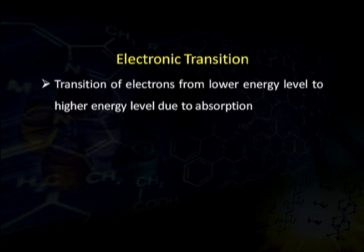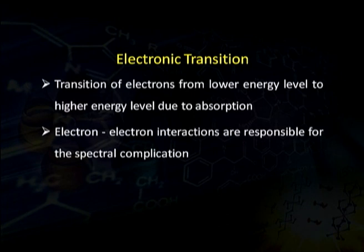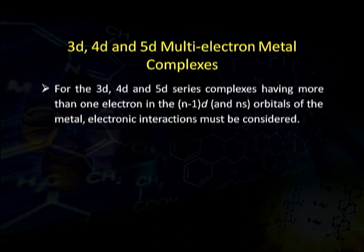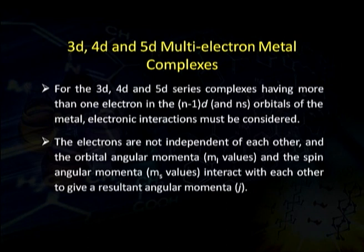Transitions of electrons from lower to higher energy levels occur due to absorption of UV visible light. Electron-electron interactions are responsible for spectral complications. For the 3d, 4d, and 5d series complexes having more than one electron in their outermost or inner orbitals, electronic interactions must be considered — the electrons are not independent of each other. The orbital angular momenta (ML values) and spin angular momenta (MS values) interact with each other to give a resultant angular momenta J.